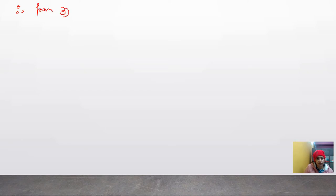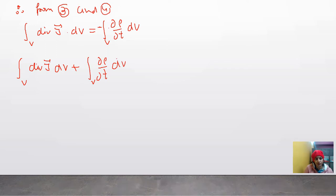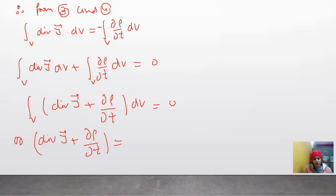From Equations 3 and 4: the volume integral of (∇·J) dv equals the volume integral of (−∂ρ/∂t) dv. Bringing both terms to the left-hand side gives the volume integral of (∇·J + ∂ρ/∂t) dv equals zero. Therefore, divergence J plus ∂ρ/∂t equals zero. This is the Continuity Equation.